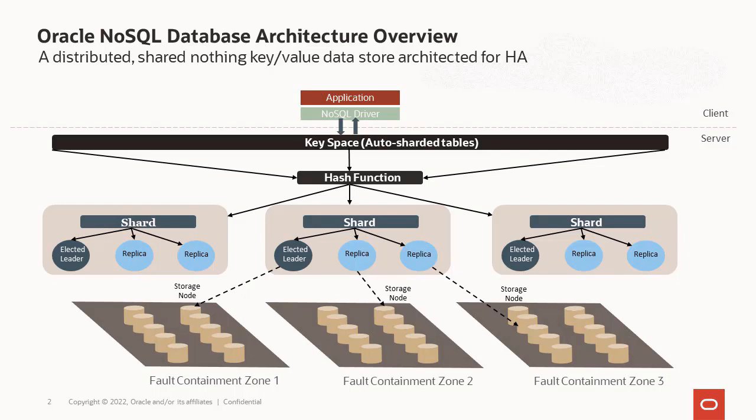Moving up the hierarchy, we have the hash function. Every record has a shard key which goes through the hash function to determine what shard that record lives in. The key space represents all records stored in the NoSQL store. In some cases the shard key and primary key are identical, but the shard key can be a subset of the primary key. Moving further up the stack, we have the NoSQL driver — we have various language drivers compiled into the application. From the hardware standpoint, we basically want commodity, off-the-shelf hardware.